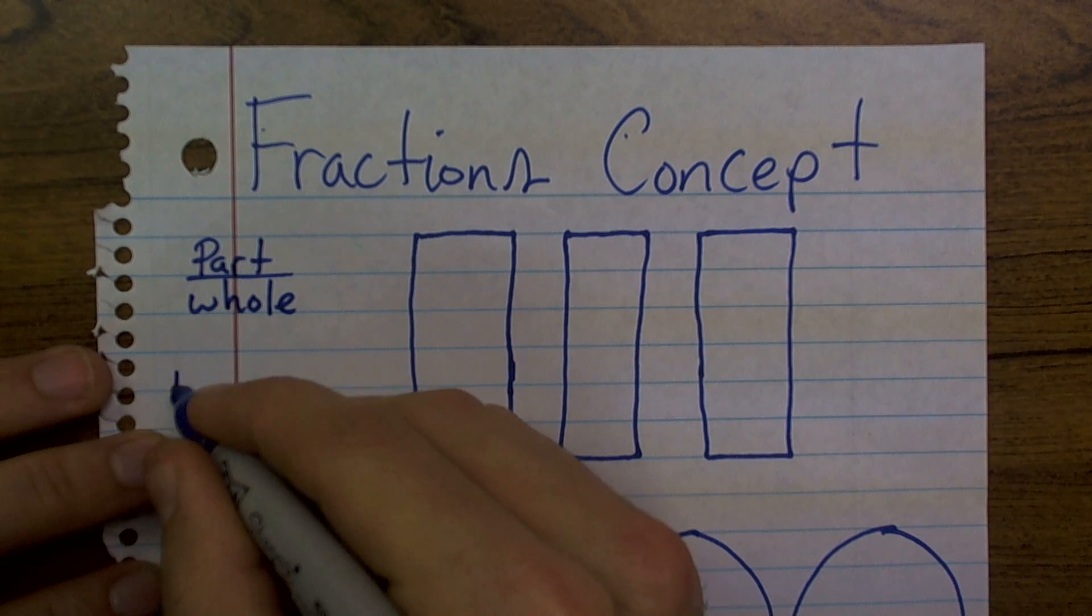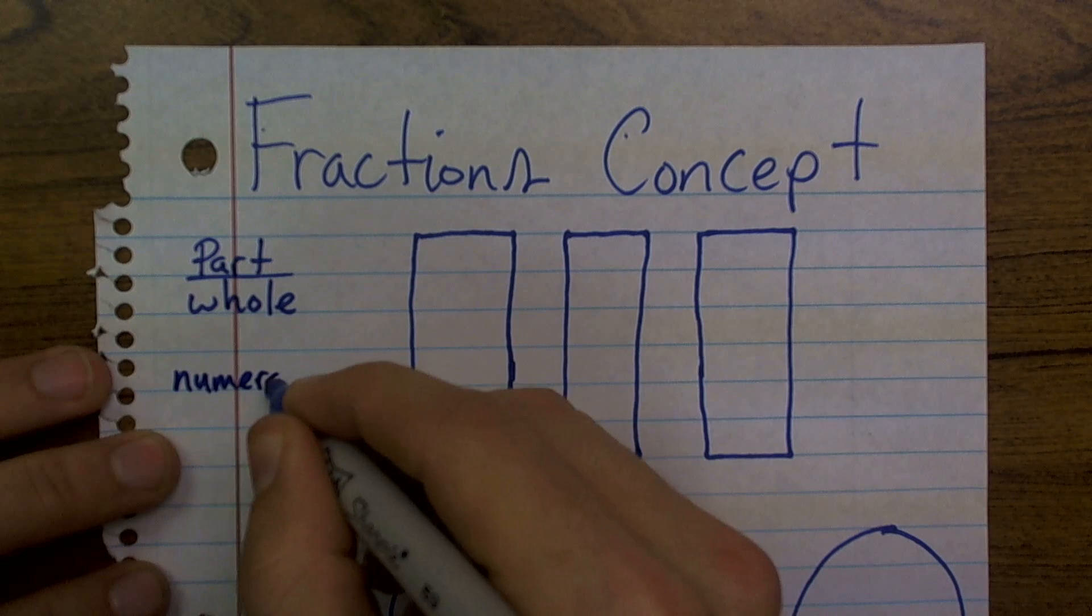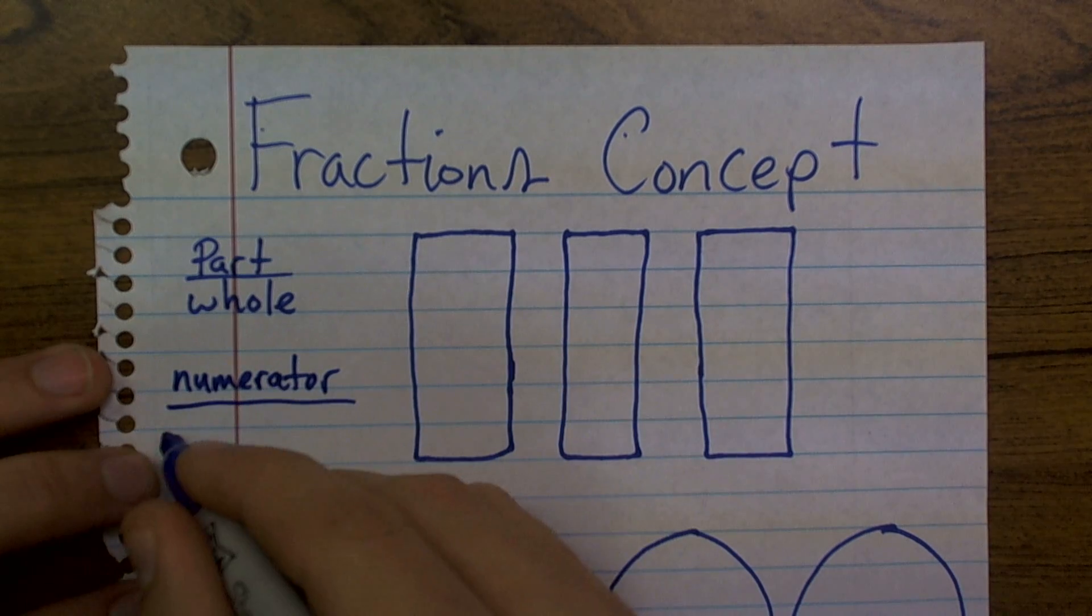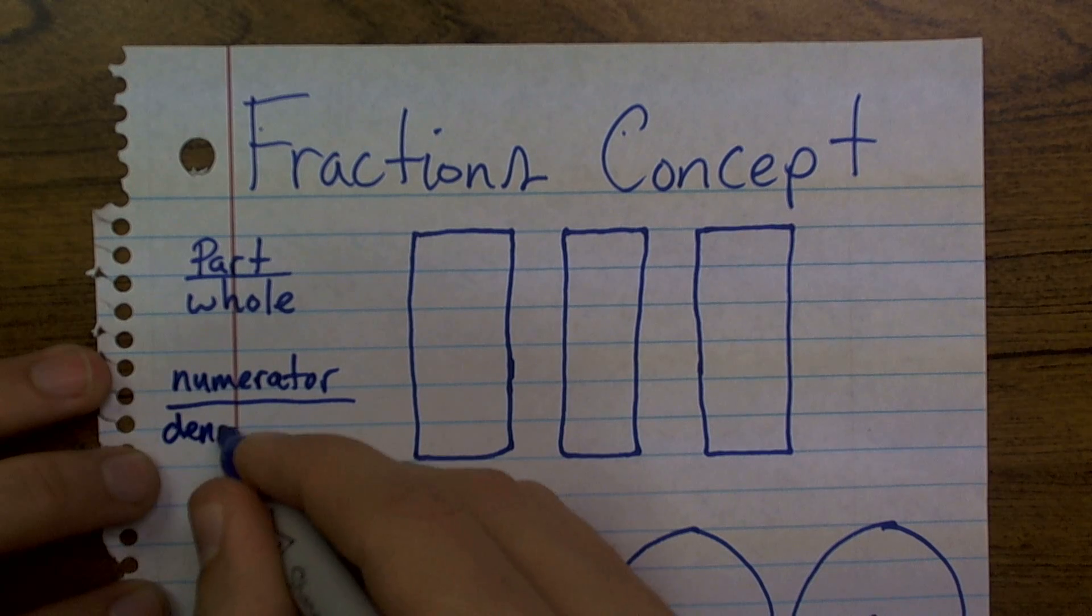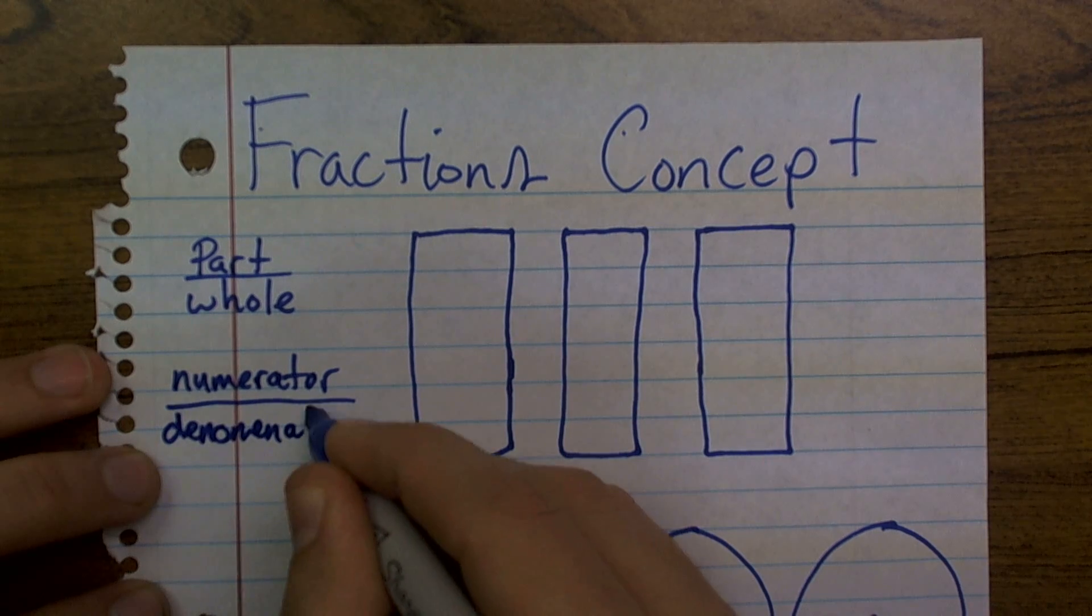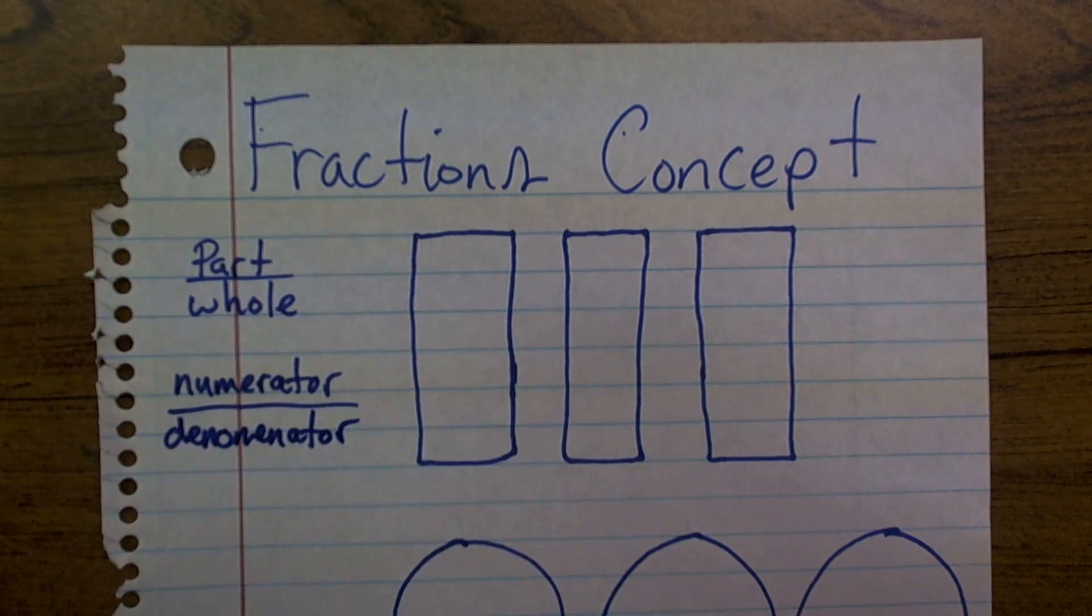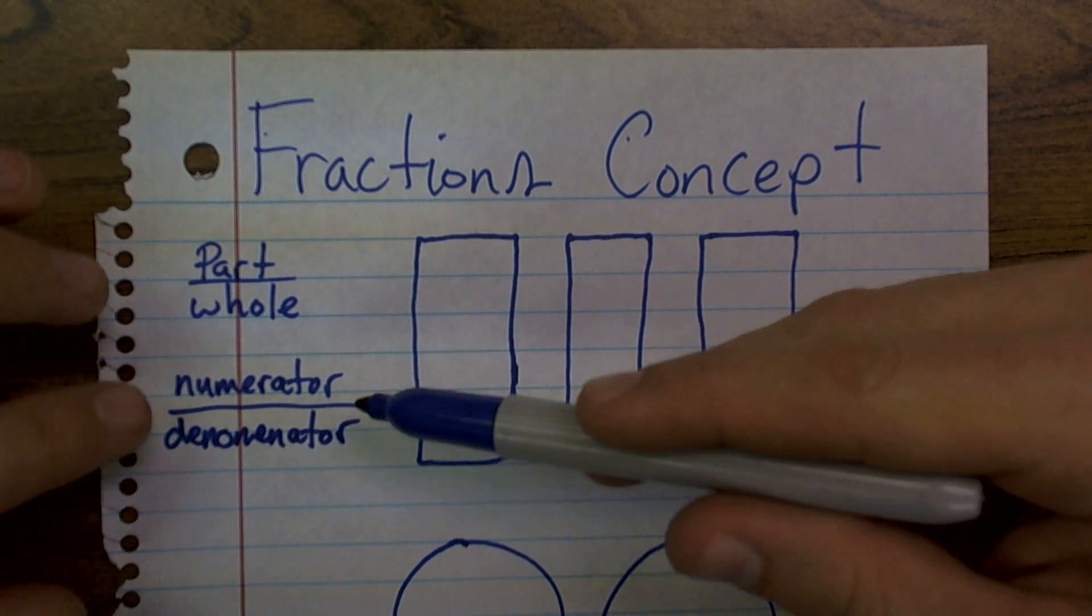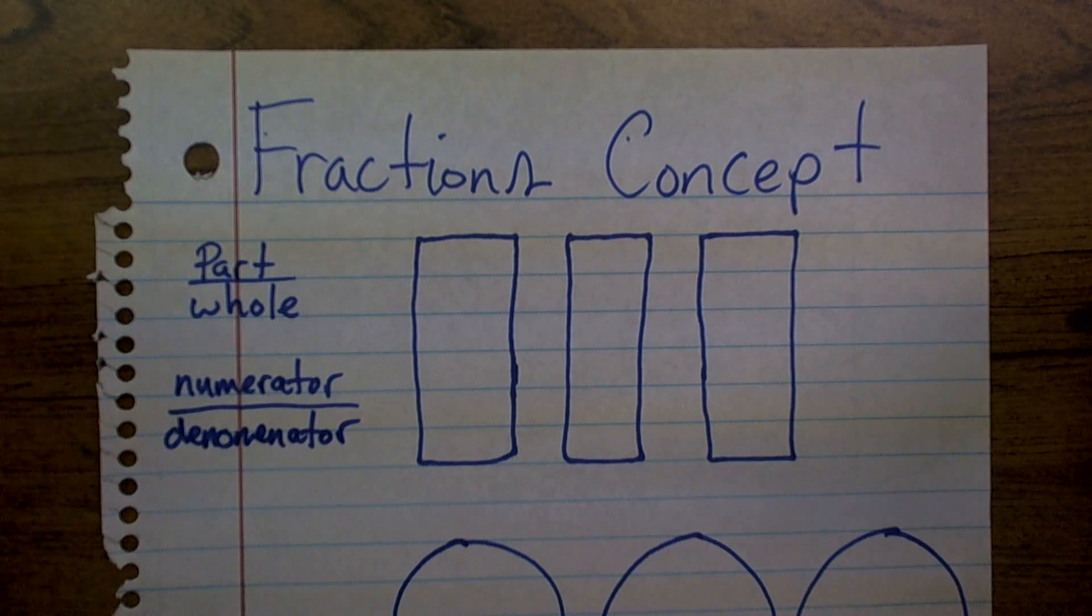The other way we can break it down is, remember, we have a numerator, that is our part, which is the top of the fraction, over our denominator. And sorry for my little spelling and writing, but I just want you to understand that you're going to have a part over a whole and a numerator over a denominator. That's really the same thing with your fraction.